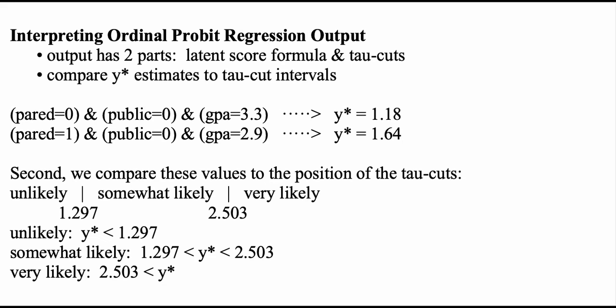Someone with a y* value less than 1.297 would be predicted to respond unlikely to attend grad school — that is the prediction for the first student with a GPA of 3.3. A y* between 1.297 and 2.503 predicts somewhat likely — that is the prediction for the second student with a GPA of 2.9. Anyone with a y* of 2.503 or larger would be predicted to respond very likely to attend grad school.